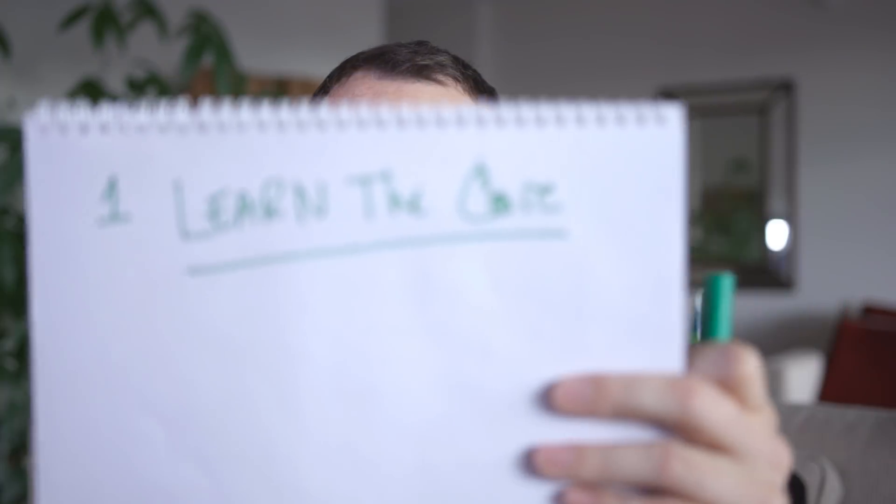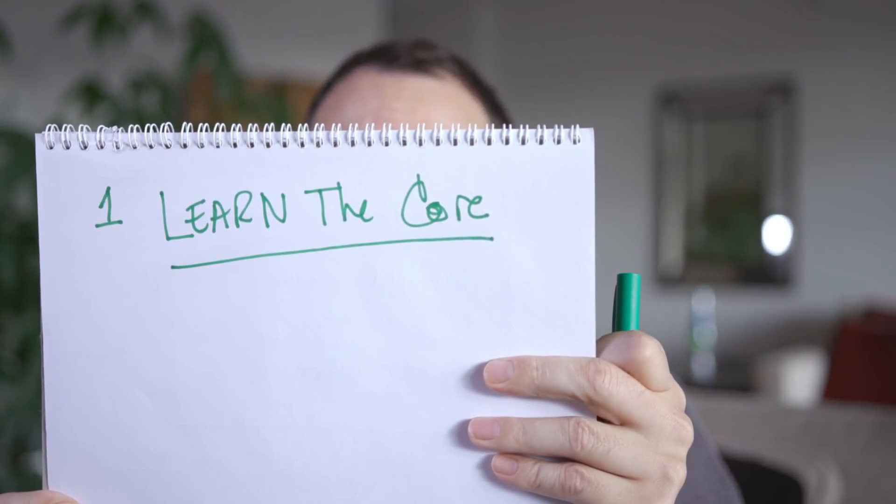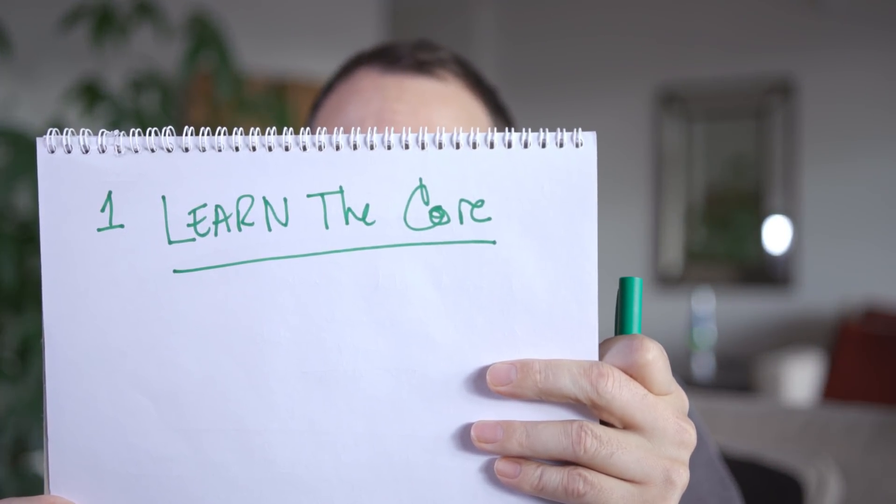So number one — what's the number one skill set I suggest you should learn for 2018? I'm going to start with the green pen. Number one: learn the core.